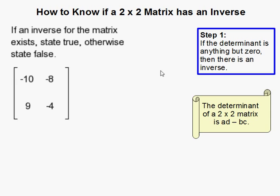It's really easy. All you have to do is find the determinant of the matrix, and the determinant of a 2 by 2 matrix is simply A times D minus B times C. So in this case...